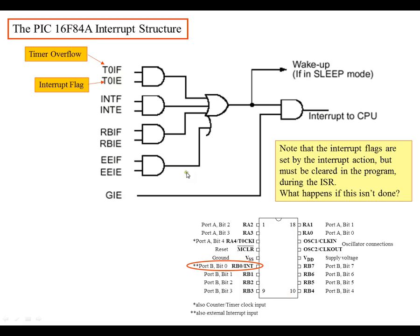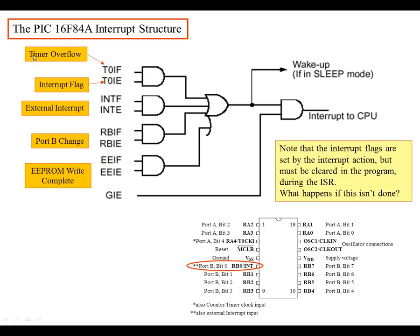So what is an interrupt? An interrupt is a way to interrupt the microprocessor from doing what it's currently doing to doing something different. For example, a timer overflow can cause an interrupt, and you can also have an external interrupt. You can have a port B change — when there's a change on port B inputs, that can cause an interrupt. Or you can have an EEPROM write complete, which can also cause an interrupt.